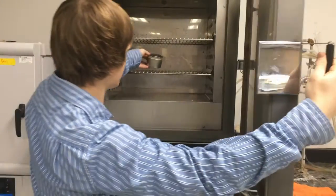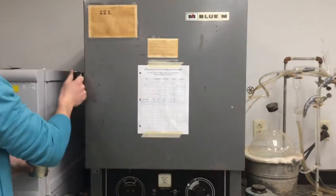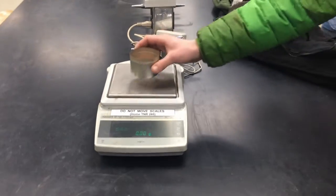Place the tin in a 105 degree oven for 24 hours in order to dry the soil. After drying, weigh the tin and record the mass.